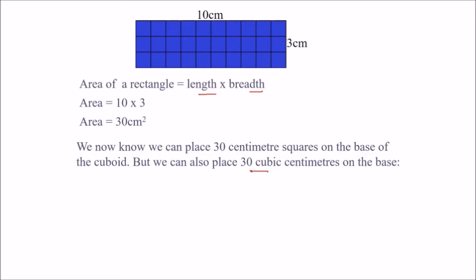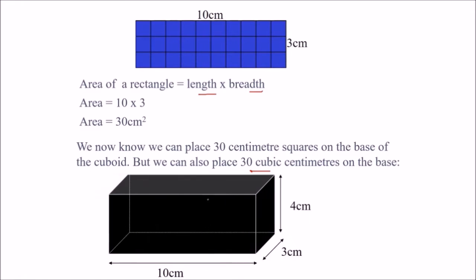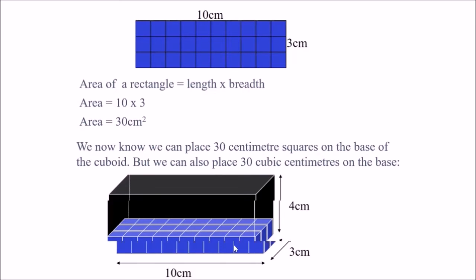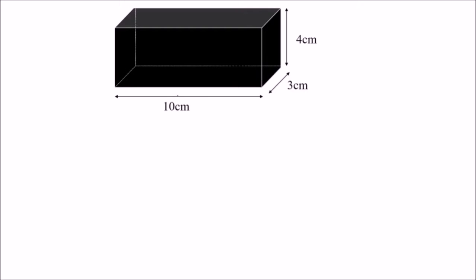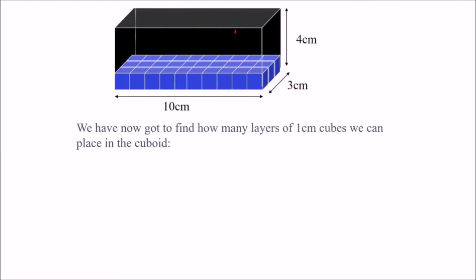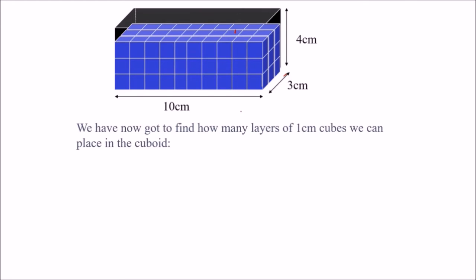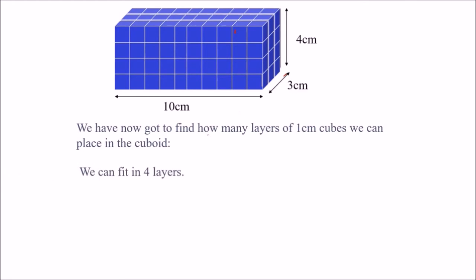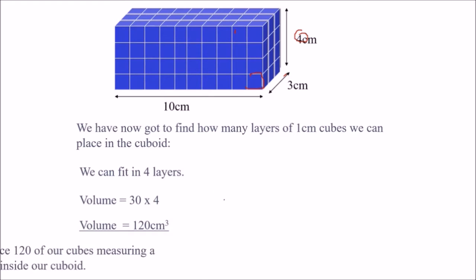We can place 30 cubic centimeters on the base of the cuboid. We also need to find how many layers of 1 centimeter cubes we can place up to height 4. We can fit 4 layers of unit-sized cubes, so this will be 30 into 4, which is 120 centimeter cube.